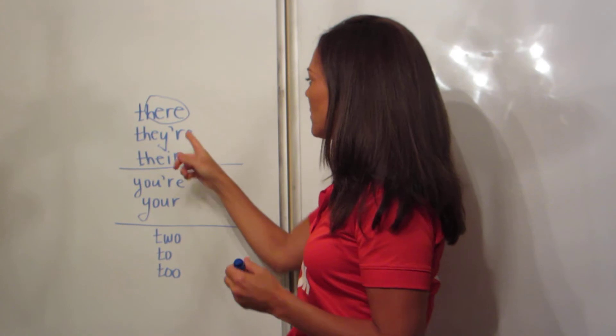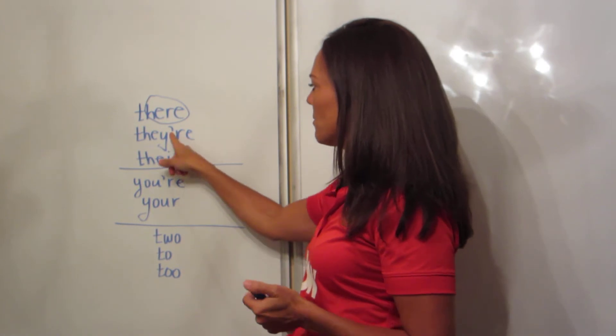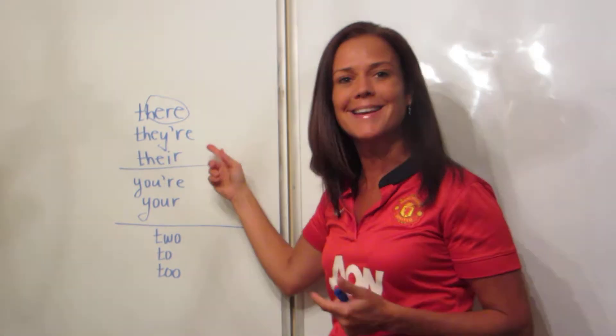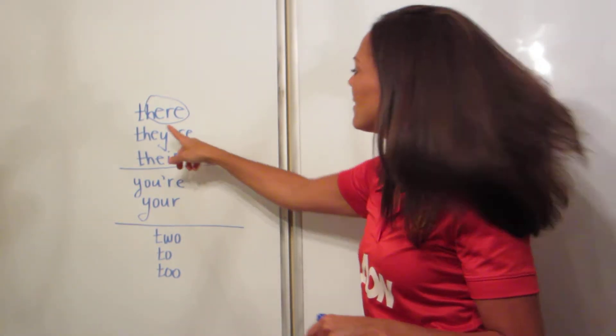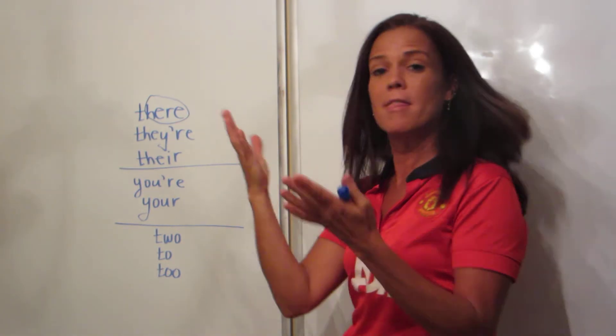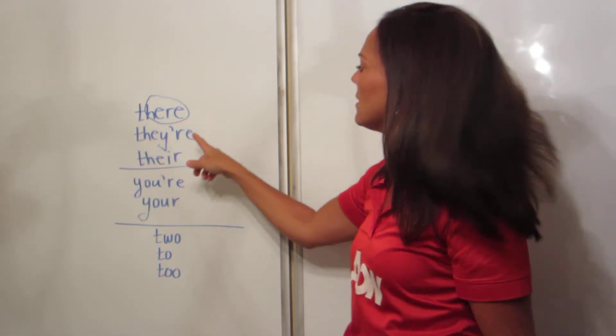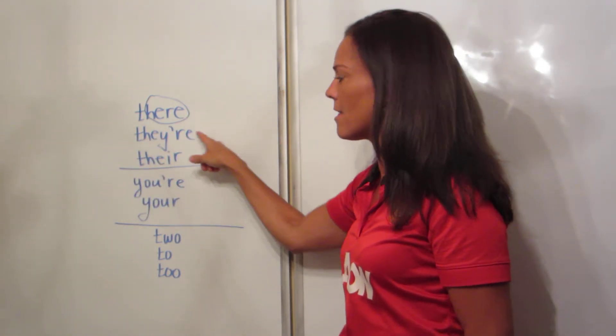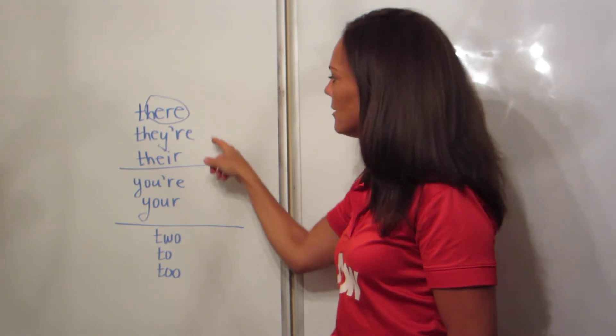There with an apostrophe — an apostrophe always takes out a letter; it's taking out the A. This means 'they are.' They are great. They're great. They are over there. They're there.